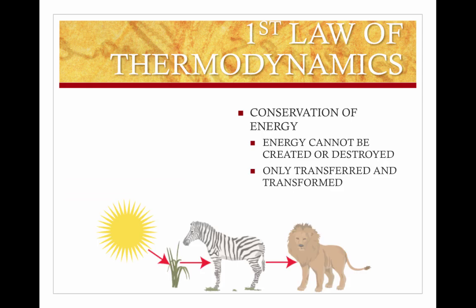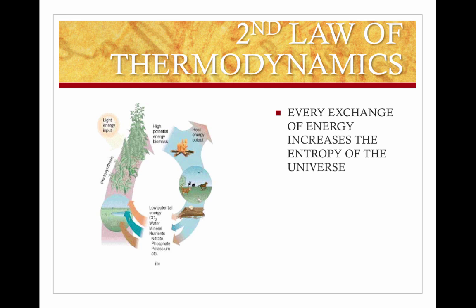The first law of thermodynamics is called Conservation of Energy. It states that energy cannot be created or destroyed, only transferred and transformed. Sunlight is used by autotrophs and converted into chemical energy, that is eaten by heterotrophs, and heterotrophs release that energy as heat.